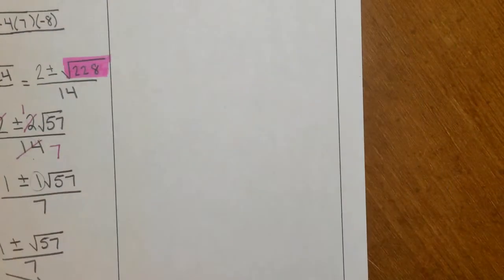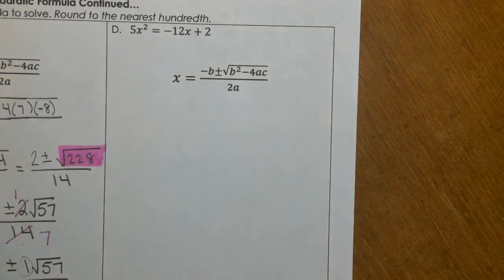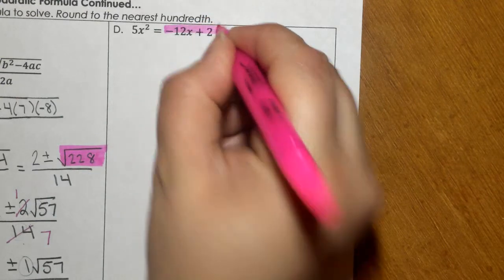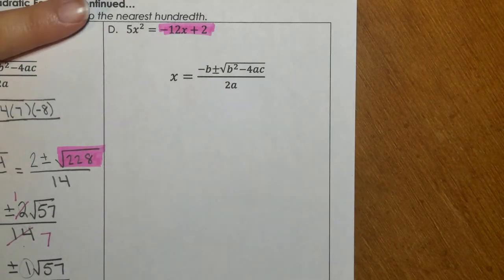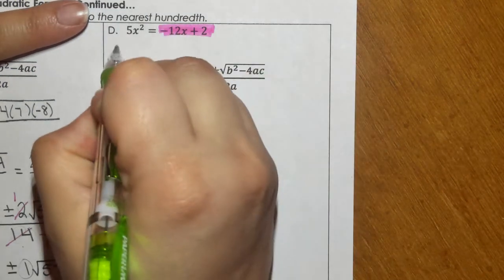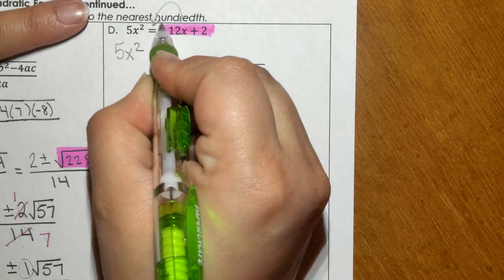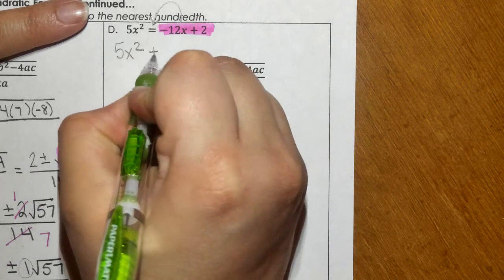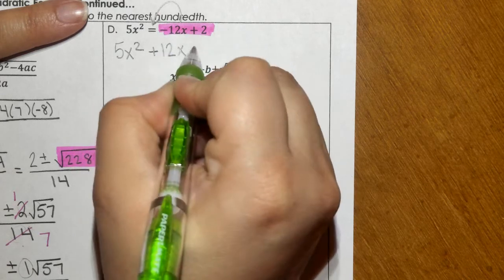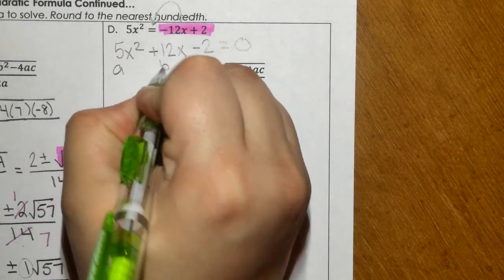Last one we're going to do for this day of notes. So there we need to have an equal 0. Remember, if you're bringing it over, you're changing the signs in both of the numbers, both terms. And then a negative 2. So you have A, B, and C. And we need to plug it in.